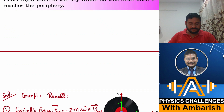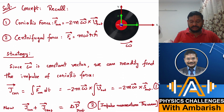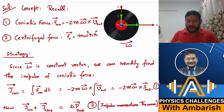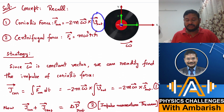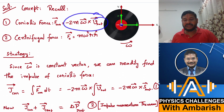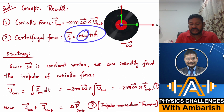Let's recall the concepts. In the rotating frame, the Coriolis force is given by −2m(ω × v_rot), where v_rot is the velocity as seen from the rotating frame — students are often confused about this. The centrifugal force is mω²r r-cap.